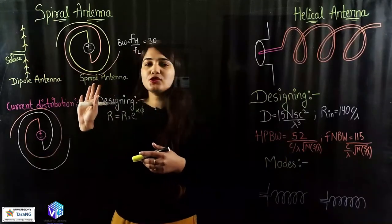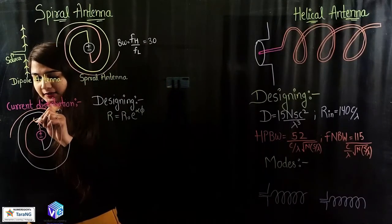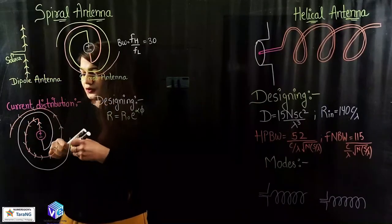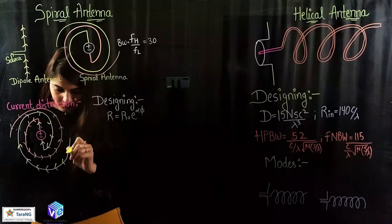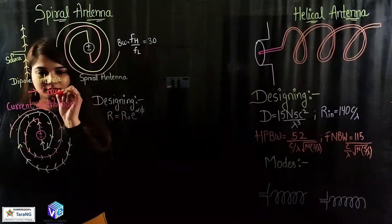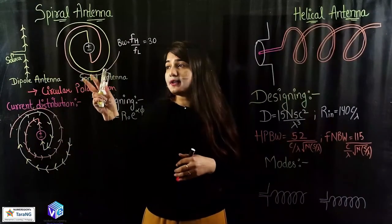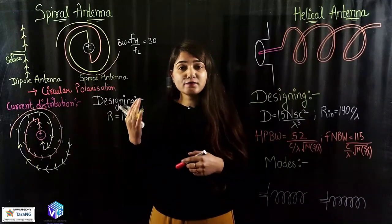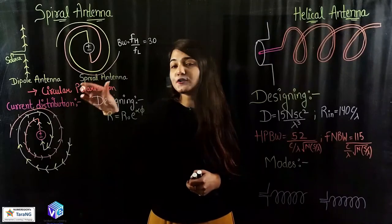Coming to the current distribution — we know the current distribution in the dipole antenna, and we can derive the current distribution for the dipole antenna turned into the form of a spiral antenna. Coming to the polarization, it is circularly polarized. The circular polarization is a very good advantage because whenever I have circular polarization I can use the antenna in telemetry operations. It is used in missiles, in other applications for spacecraft, and in direction-finding applications as well.